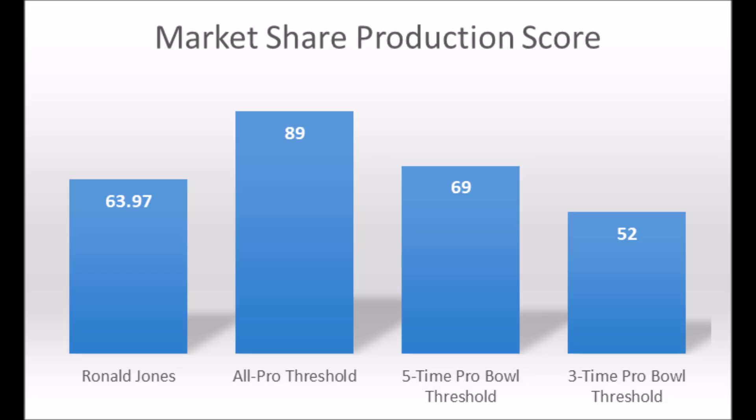Then there's the three-time Pro Bowl threshold of 52 or higher, which is more so where Ronald Jones ended up. That's essentially the three-time Pro Bowl area — typically running backs that have relatively short lifespans, but they definitely do pretty decent. They put in work, so to speak.